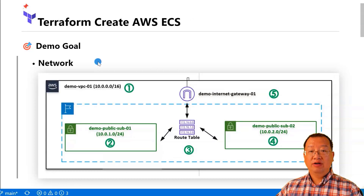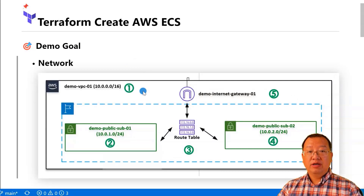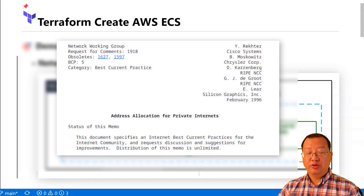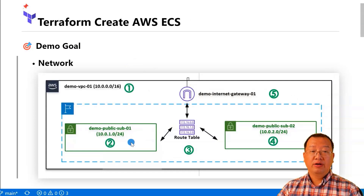In the network level, we'll cover five main resources. Starting from left to right: the first resource is the creation of the demo VPC01 with an IP CIDR block of 10.0.0.0/16. This IP CIDR block configures the private IP address ranges specified in RFC1918. You can find more detail in the documentation provided. Next, in the US East region, we create a public subnet, demo-public-sub01, with an IP CIDR block of 10.0.1.0/24.